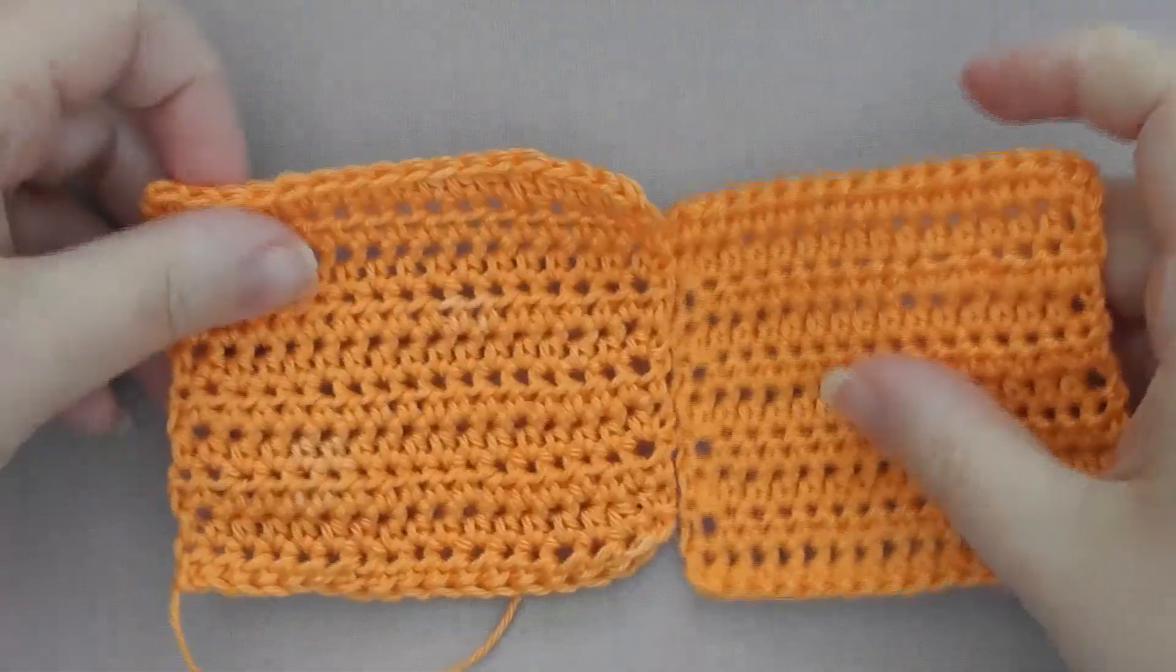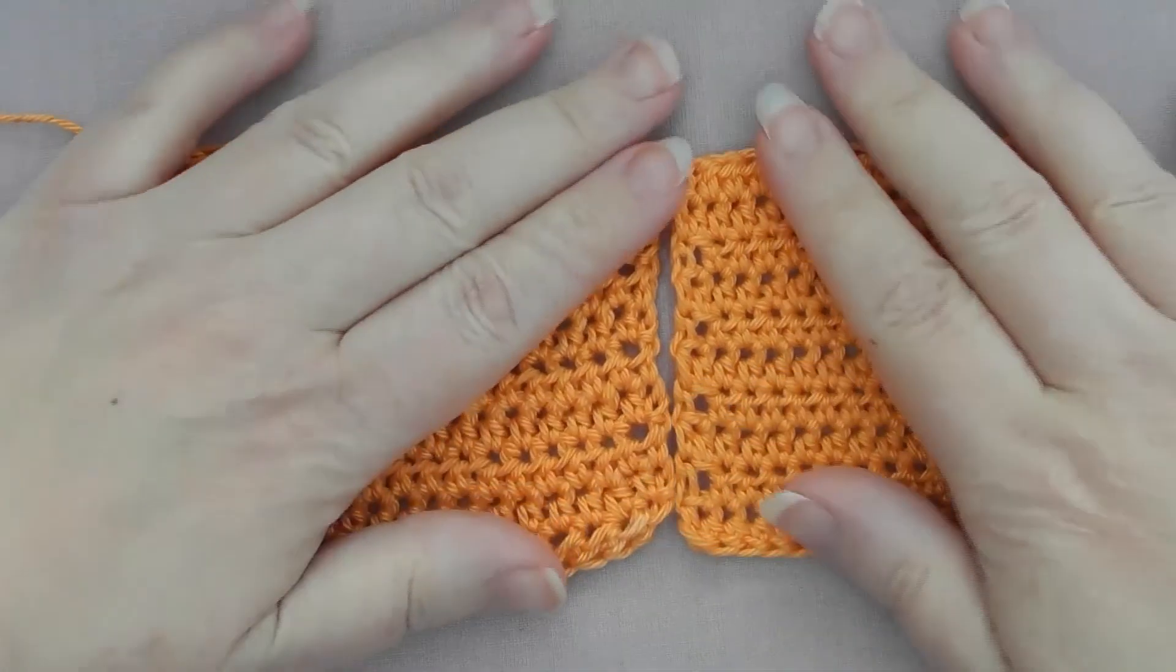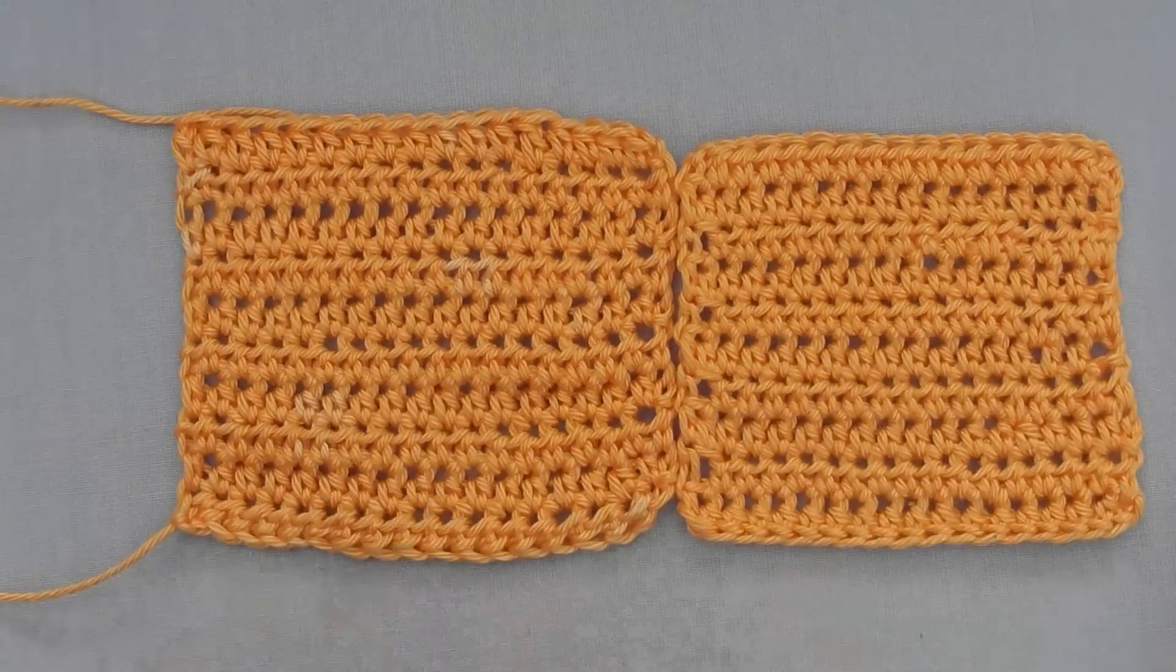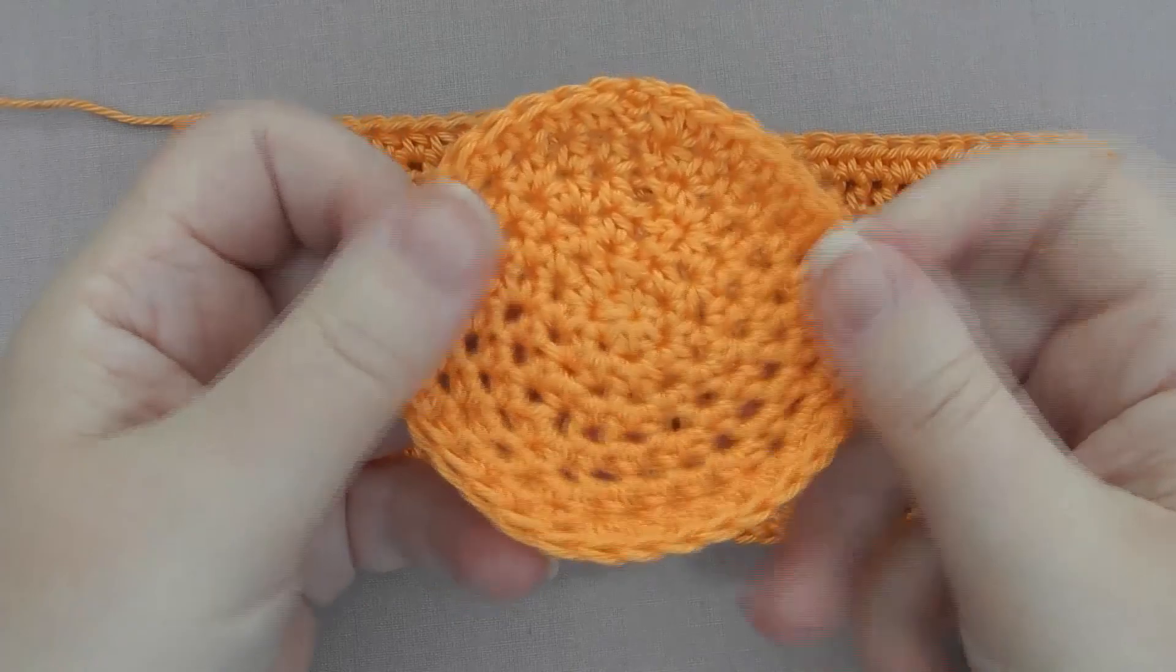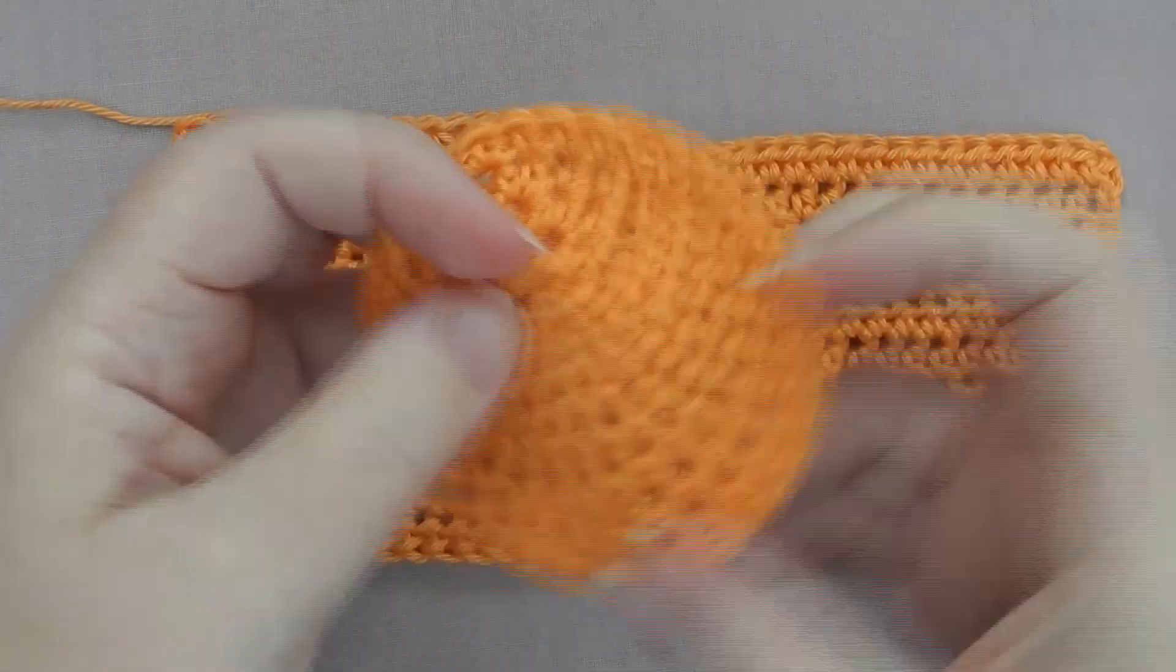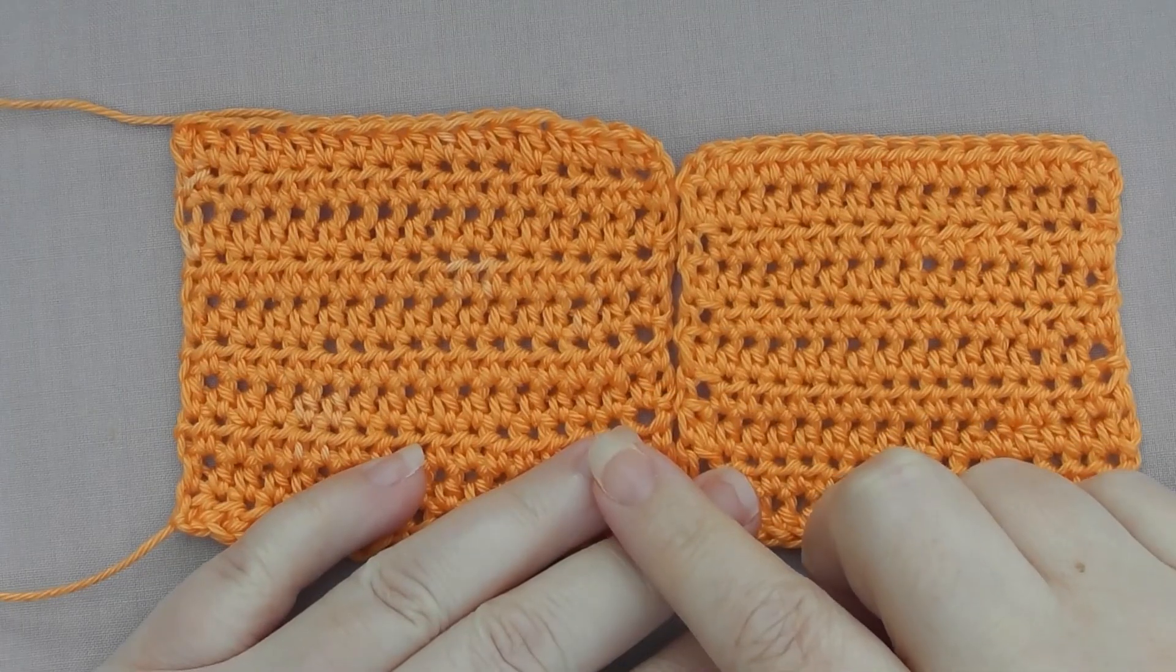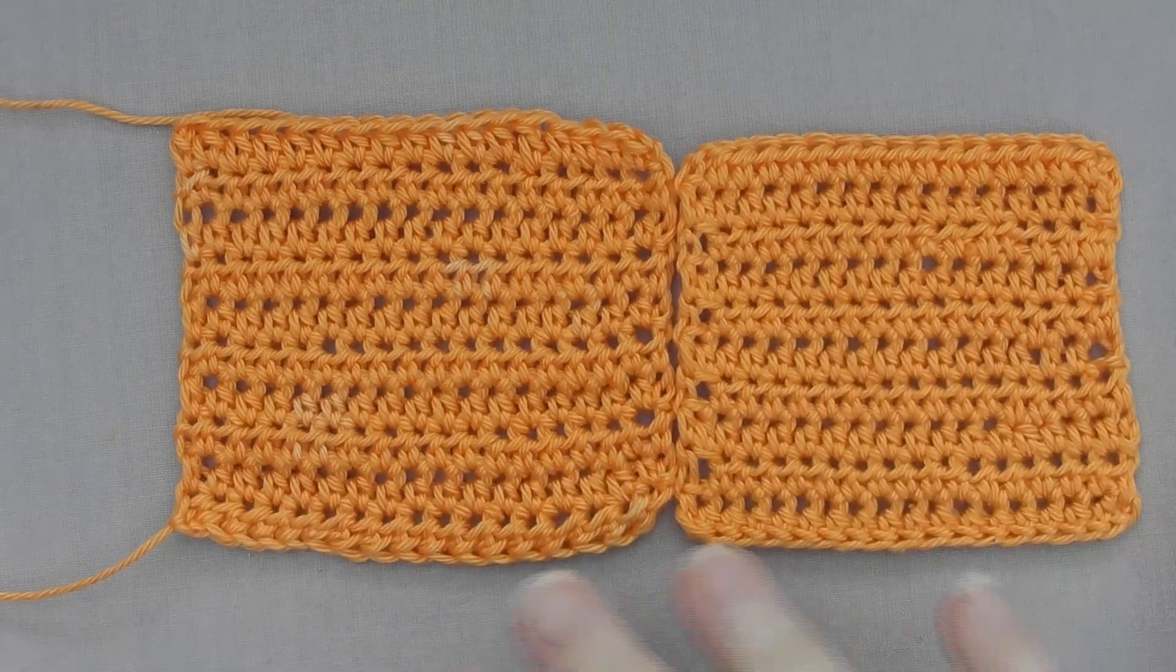So, you can see, that one's my looser tension because of the camera, but they're not a huge difference in size. And they work really well. So, check the next video for the round version. And remember, this is the half double crochet or the half treble crochet for UK terms. Thank you. Bye.